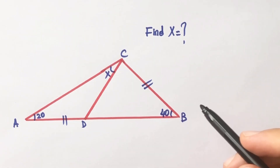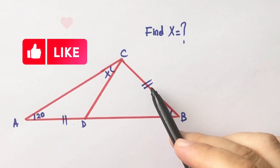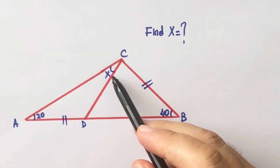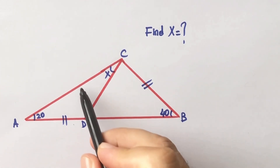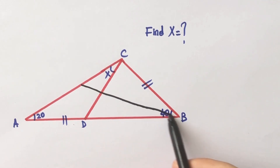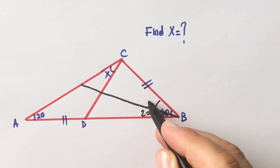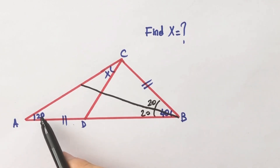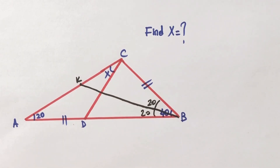Hello everyone. In this video we will calculate the value of the missing angle x using three different methods. The two given angles are equal. Notice that the ratio of the angles is 2, which means if we draw a bisector line like this, we get an isosceles triangle. Let's call the new point K.